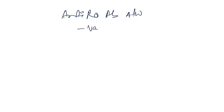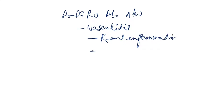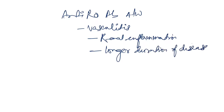Anti-Ro antibody is associated with vasculitis, renal inflammation, and longer duration of disease. Anti-La antibody is the third key antibody. However, these antibodies alone are not sufficient for accurate diagnosis — they are not confirmatory on their own.